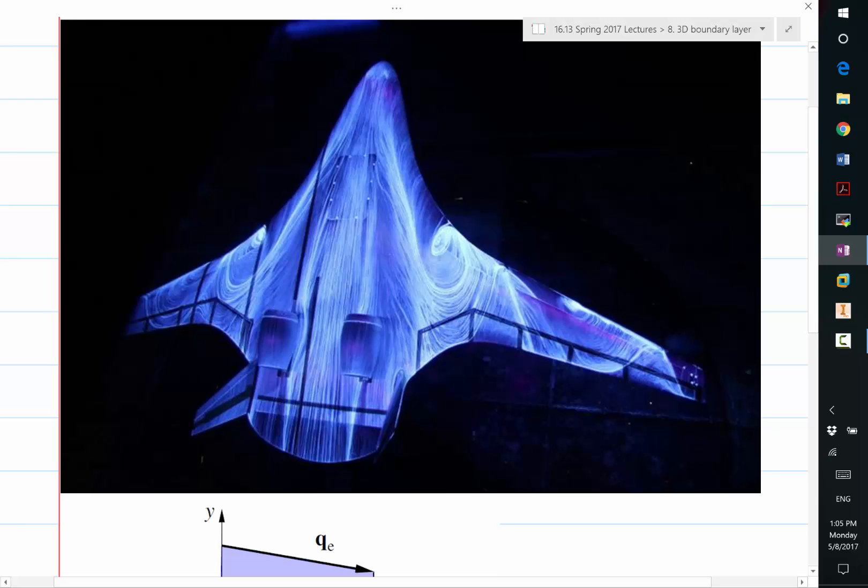That's a blended wing body airplane model at pretty high angles of attack. And good luck explaining this picture, which shows all the streams of the oil flow, with our two-dimensional theories of the boundary layer.